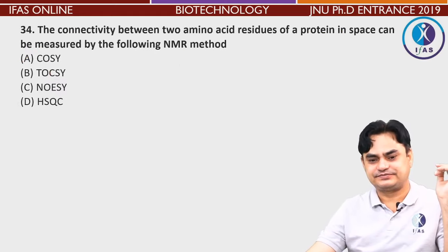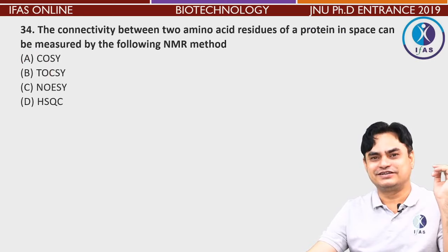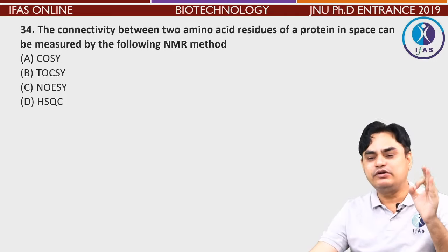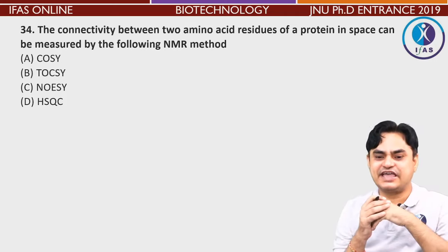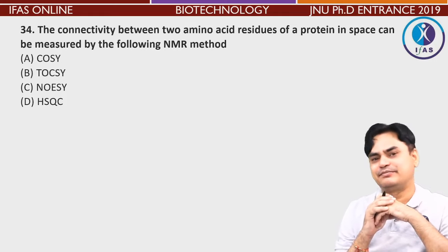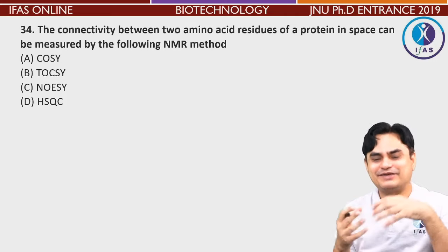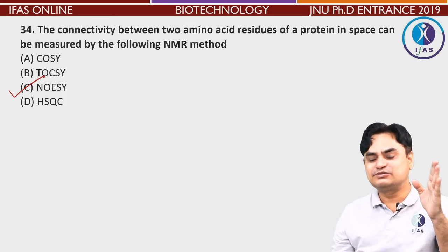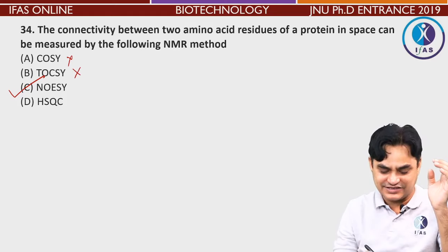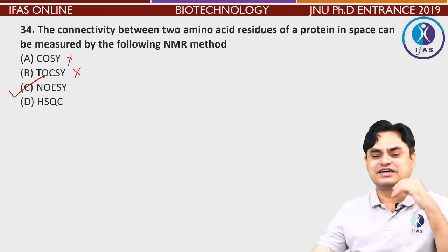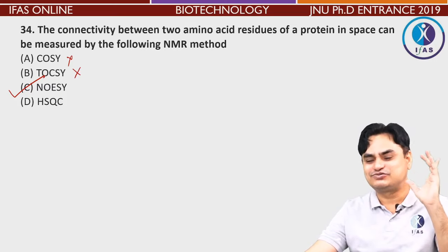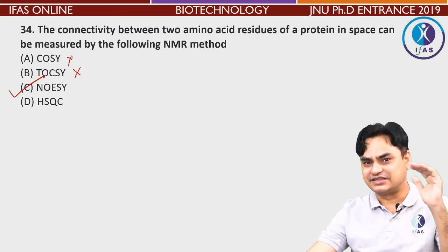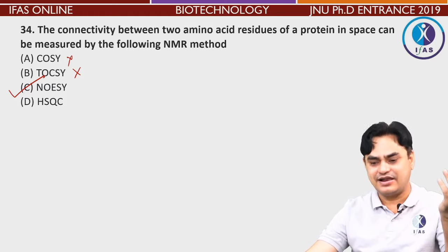The next question: the connectivity between i and i+1 amino acid residues of a protein in space can be measured by which NMR method? This is a very direct answer — Nuclear Overhauser Effect Spectroscopy (NOESY) can be used. Based on connectivities, you can further predict secondary structures of proteins and eventually learn about tertiary structure. The answer is C — Nuclear Overhauser Effect Spectroscopy.